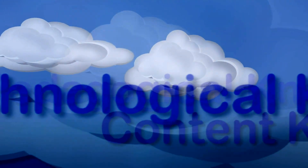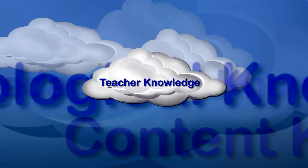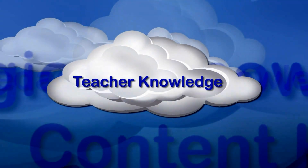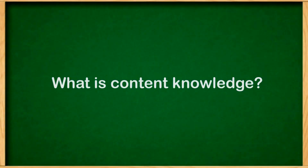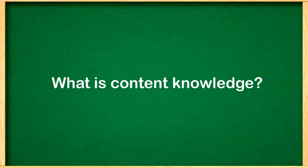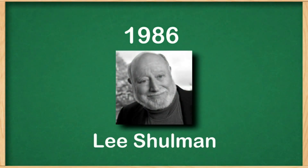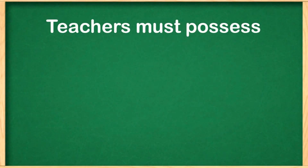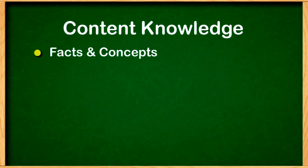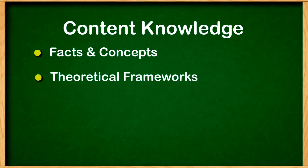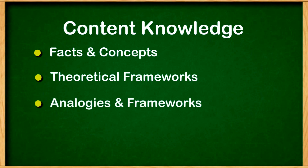In the mid-1980s, researchers conceptualized teacher knowledge as a part of this large cloud of knowledge. A man by the name of Shulman explained it in this way: teachers must possess knowledge about a content area or discipline. This includes facts and concepts related to the content area, as well as the theoretical framework of that content area. Teachers need a firm grasp of the analogies and frameworks that would be taught to explain these theories, facts, and concepts.